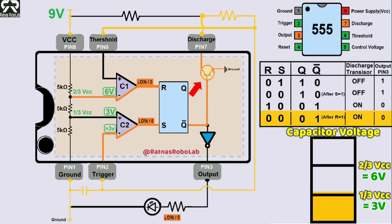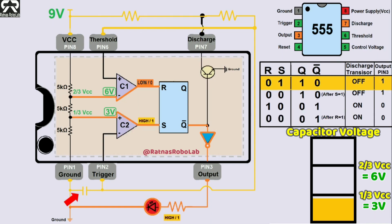Dropping below 1/3 Vcc or dropping below 3V, voltage at pin 2 or comparator 2's negative terminal is lower than 3V, comparator 2's positive terminal takes priority, comparator 2's output becomes high and triggers the 555's output pin 3 to high, turning on the LED again.